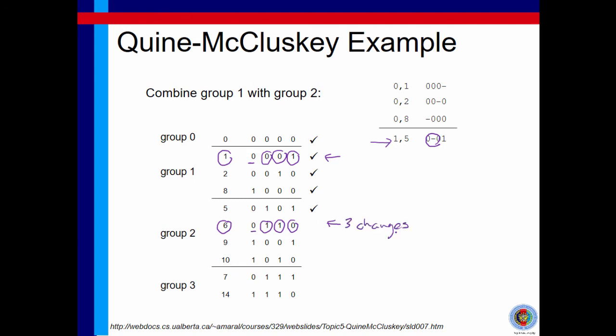In this case, we cannot combine these two minterm. Minterm that we can combine can only be differing in only one variable. One and only one variable. So, we are not going to put a tick in minterm 6 and we are not going to list it here.